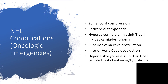Non-Hodgkin lymphoma complications include oncologic emergencies. Spinal cord compression will cause pain and radiculopathy — potentially cauda equina syndrome — requiring emergency management with orthopedic surgeons and neurology. Pericardial tamponade presents with Beck's triad: no normal heart sounds, distended neck veins, and hypotension.